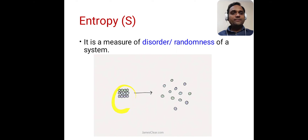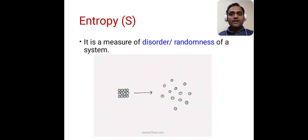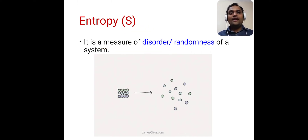Suppose we have a system that is ordered. When it undergoes some changes and becomes disordered — this is ordered, and after changes it becomes disordered. When we go from an ordered system to a disordered system, there is an increase in entropy. Entropy is a measure of disorder or randomness of a system; whenever molecules become more disordered, entropy increases.